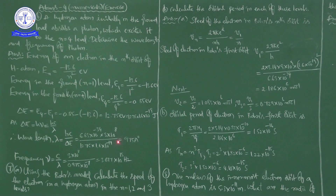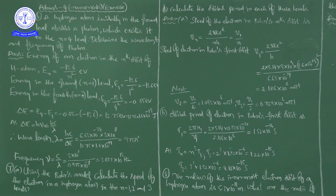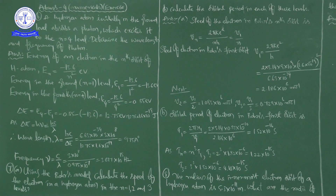Bohr entered the picture and explained the energy diagrams — what happens to the electron regarding energy when it moves from one level to another. This is the main core information regarding atomic structure from a physics point of view, covering what Rutherford provided, the drawbacks of his model, and the valuable information given by Bohr.